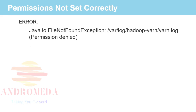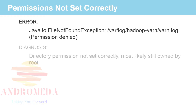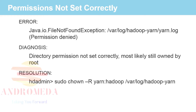First, permission not set correctly. The error message was: var/log/hadoop-yarn/yarn.log, permission denied. Our diagnosis was that this was a directory permission not set correctly — most likely that the hadoop-yarn log was still owned by root. And indeed, the resolution turned out to be the case. A simple command of sudo chown changed it to yarn:hadoop, and everything worked.